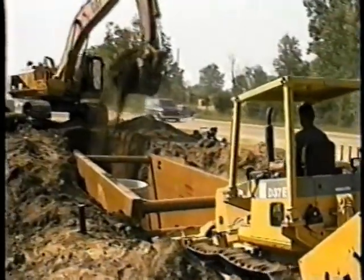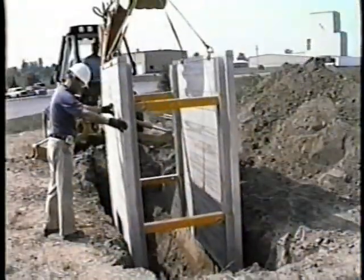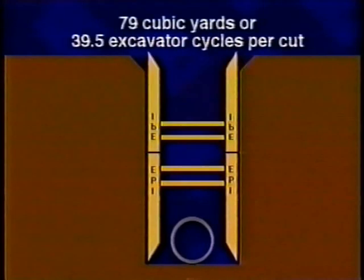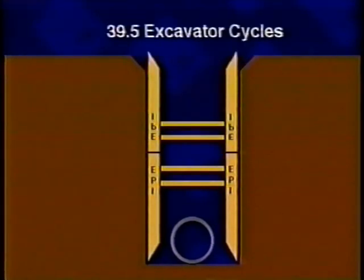Using your trench shield to keep your excavation narrow can save you thousands of dollars on your utility jobs. In this illustration, you can see the amount of soil that would have to be excavated if you were not using a trench shield and sloping back your trench walls to OSHA or other safety requirements. You can see how the excavation cycle time is reduced using just one trench shield, and how the excavation cycle time is reduced dramatically using two trench shields — from 72 excavator cycles per pipe installation using one trench shield to 39.5 cycles per pipe installation using two trench shields.